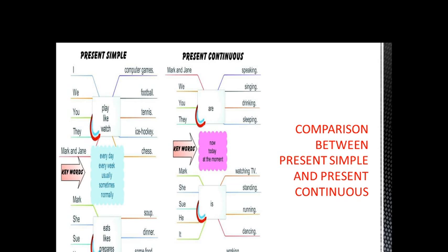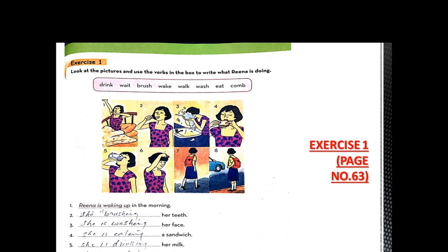Look at this picture and use the verbs in the box to write what Rina is doing. There are some words in the box we have to put in the correct sentence. So the first one is already done. Rina is waking up in the morning.